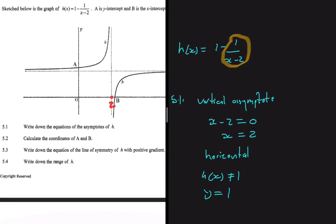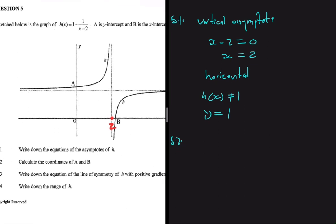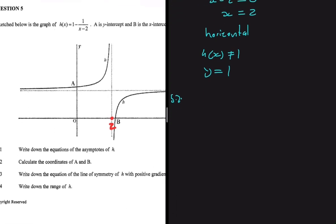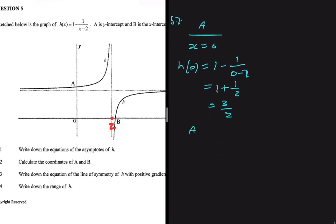Moving to 5.2, which asks us to calculate the coordinates of A and B. Let's start with A, our y-intercept, where x equals 0. Substituting into H(x): H(0) equals 1 minus 1 divided by 0 minus 2, which gives us 1 plus one half, equals 1 and a half, or 3 divided by 2. So the coordinates of A are (0, 3/2).